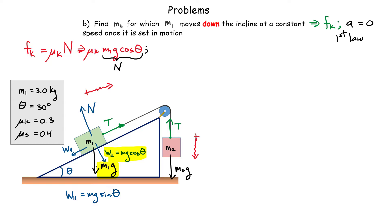Now let's look at Problem B: find the value of m2 for which m1 moves down the incline at constant speed once set into motion. I keep the forces the same but change the direction of friction — since the block is now moving down, kinetic friction acts up the incline. I also update the coordinate system: positive for m1 is now down the ramp, and positive for m2 is upward.